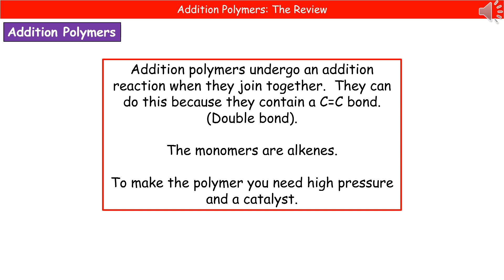To make this happen we need two special conditions. The first one is a high pressure, and the second one is a catalyst. So to carry out addition polymerization we need high pressure and a catalyst, as well as the alkene monomers.